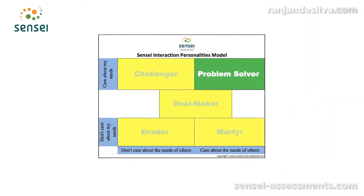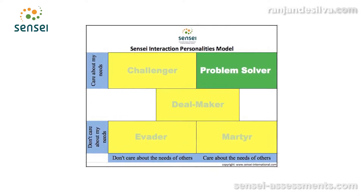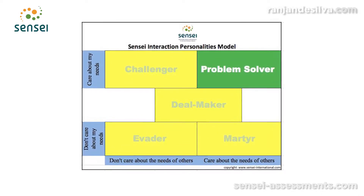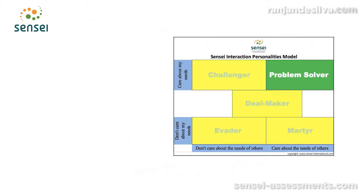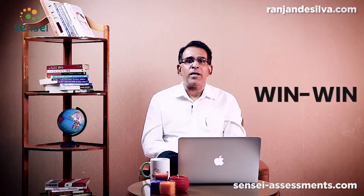The third personality is where you are high on mutuality as well as high on assertiveness — you care about your needs as well as the other person's needs. These are problem solvers. They always try to listen to the other's point of view, understand their needs and concerns, explain your own needs and concerns, talk together, go into a problem-solving mode, and come up with a solution where both people are happy. That's called a win-win mindset: you win and I win.